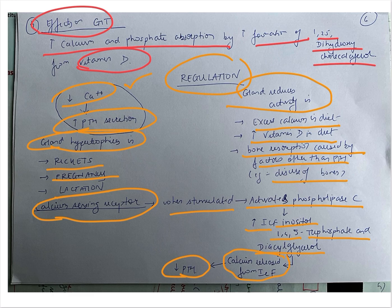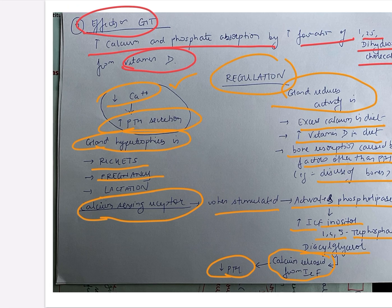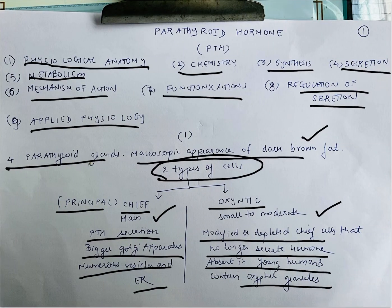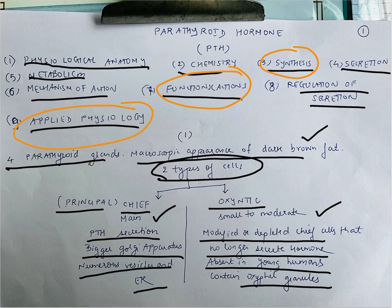Applied physiology is for self-based learning. For a 5-mark answer, you are only supposed to write the synthesis, the functions, and the applied physiology. You can write regulation of secretion in short. Thank you so much for watching.